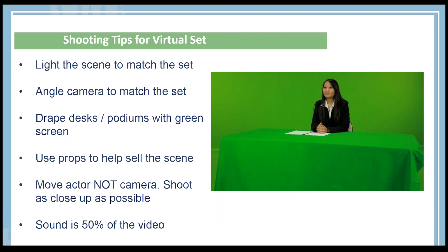Here are some tips for how to shoot a virtual set. The first tip is to light the scene to match the set. Think about what you want the image to look like at the end. If you're doing a sci-fi or industrial looking thing, it'll probably have a darker look, so light your actors to match. If you're shooting a newsroom, you probably want it nice and bright and evenly lit.